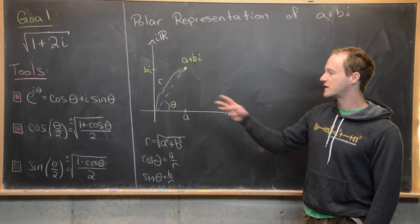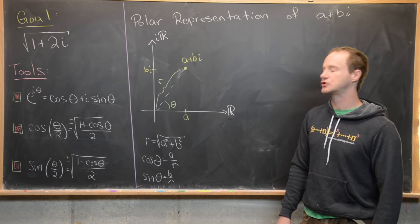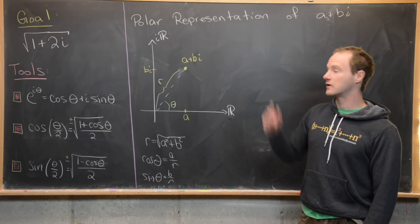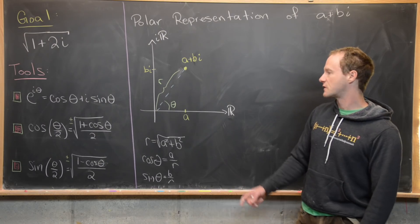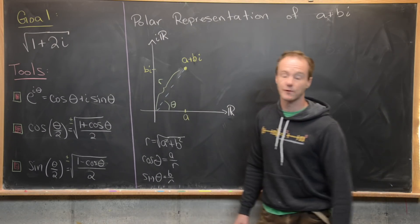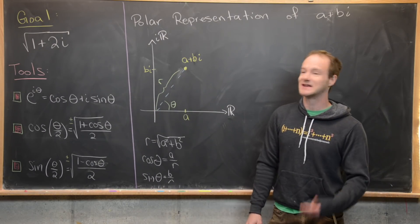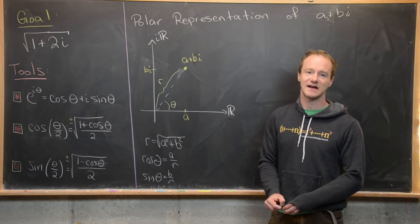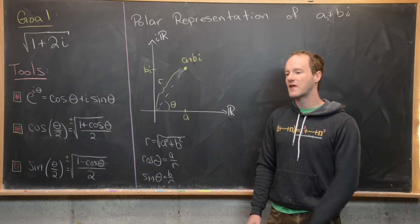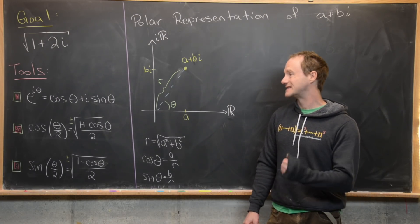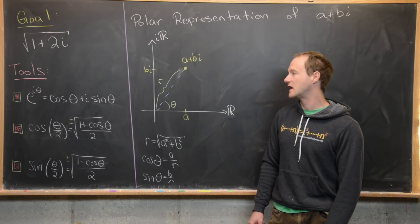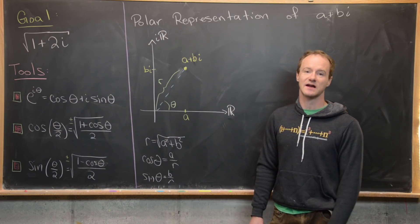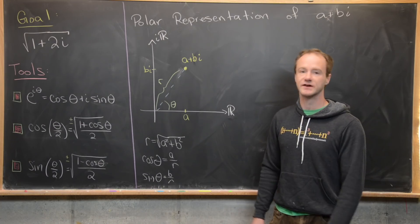We're going to use three main computational tools in order to find this value. The first one is Euler's formula, which says e to the i theta equals cosine theta plus i sine theta. A proof of that follows from the Taylor series of e to the i theta and cosine theta and sine theta, and that's a pretty quick calculation.